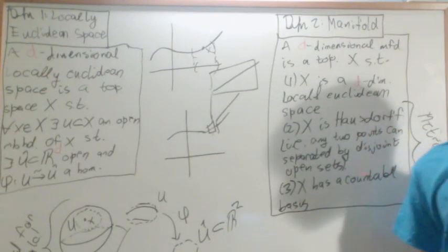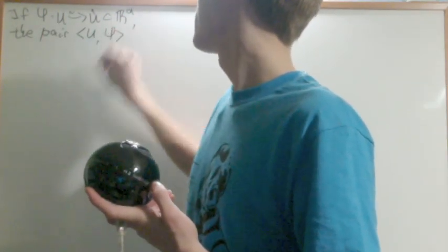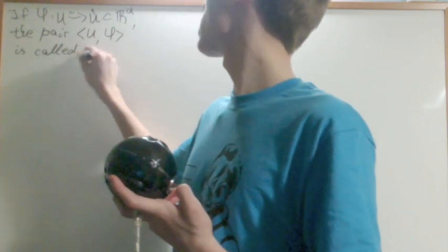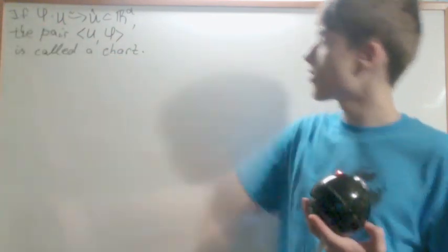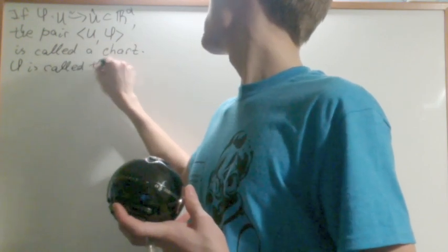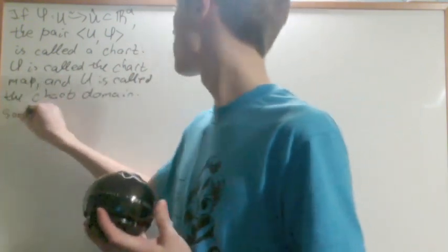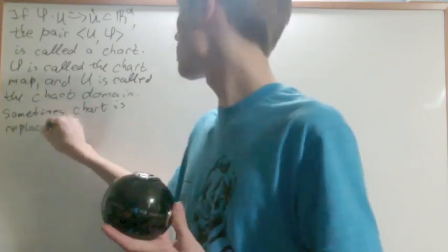We'll go ahead and add some terminology now. If phi is the homeomorphism from U to U hat an element of Rd, from before, the pair U, phi is called a chart. So basically those homeomorphisms and those open sets from the definition before are grouped together and it's called a chart. Phi is called the chart map and U is called the chart domain. Sometimes chart is replaced with coordinate.